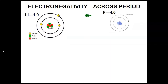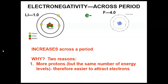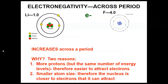As I go across a period, electronegativity increases. This relates to the fact that I have more protons but the same number of energy levels, so that stronger nucleus makes it easier to attract electrons. Additionally, the atom is smaller, so the nucleus is actually closer to the electrons that it could attract.